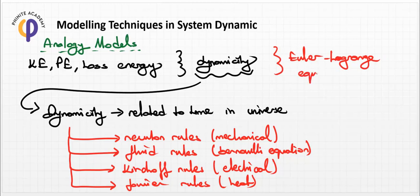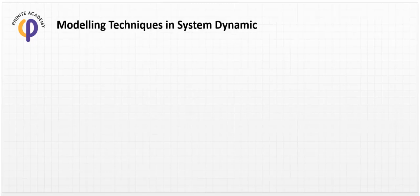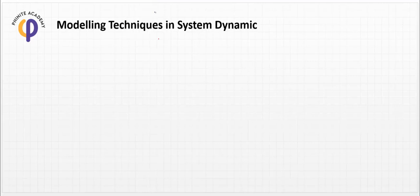You can search for this and easily find it by using energy techniques with the Euler-Lagrange formulation. In order to create dynamic modeling, we need to utilize these rules and equations to create dynamicity, and from this we can create analogy models. Now we need to focus on what analogy is.